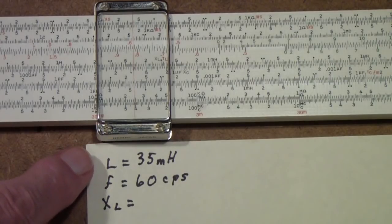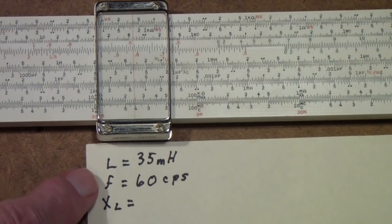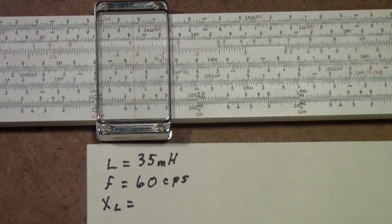And the unknown is XL. So we are going to be using these three scales, the L scale. And on this rule, remember, the L scale on the back is for inductance. It's not for logarithms. On most slide rules, the L scale is for logarithms. The F scale is for the frequency. And we're trying to look for XL. So let's see how we would do that.